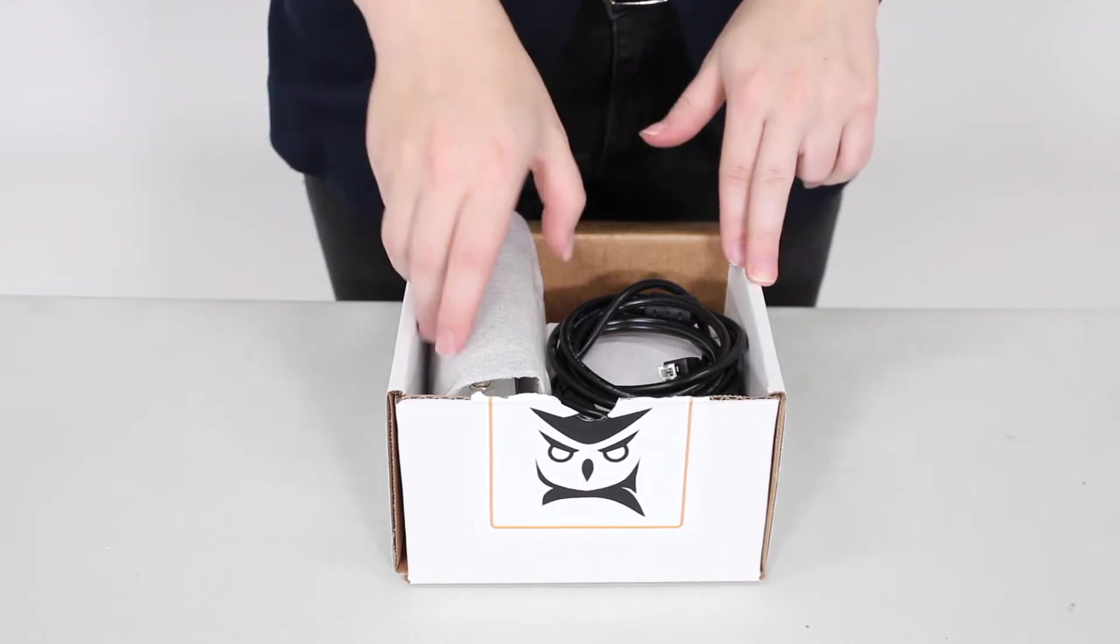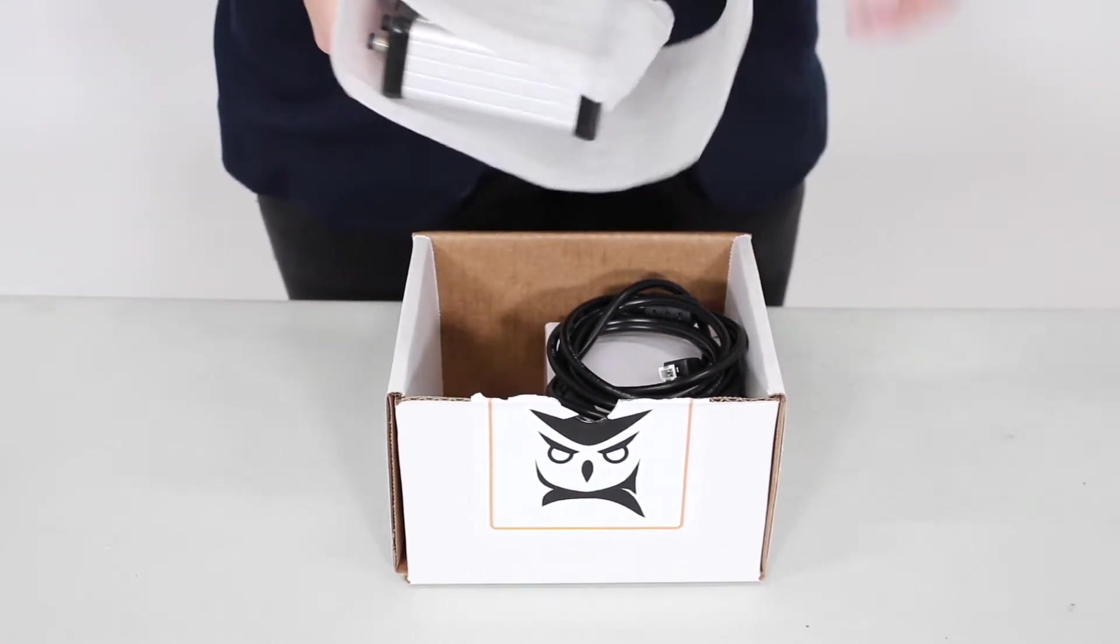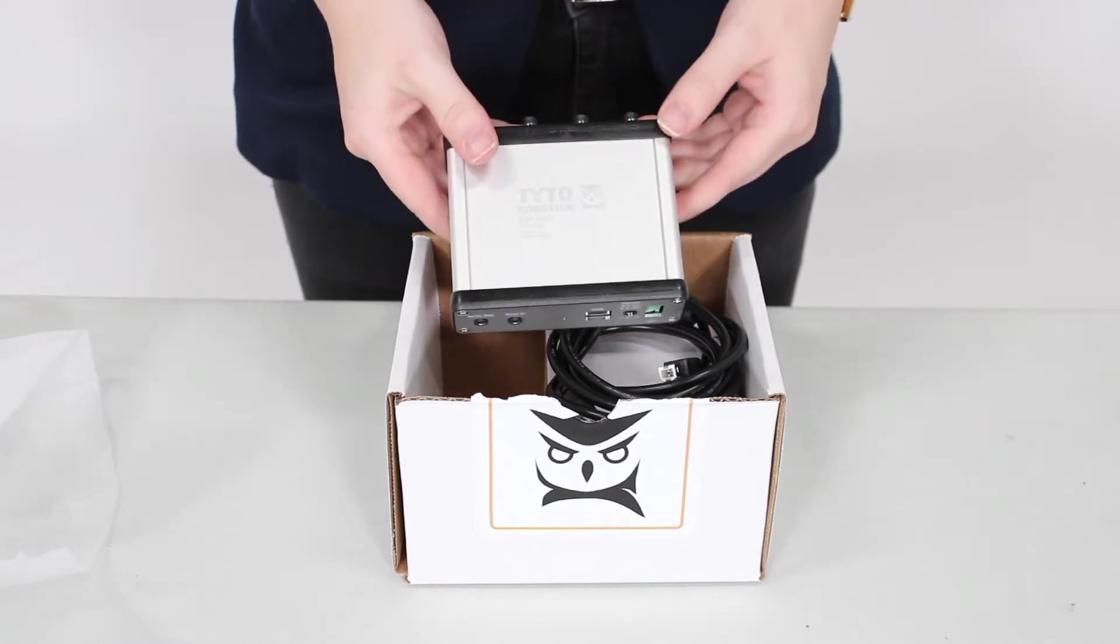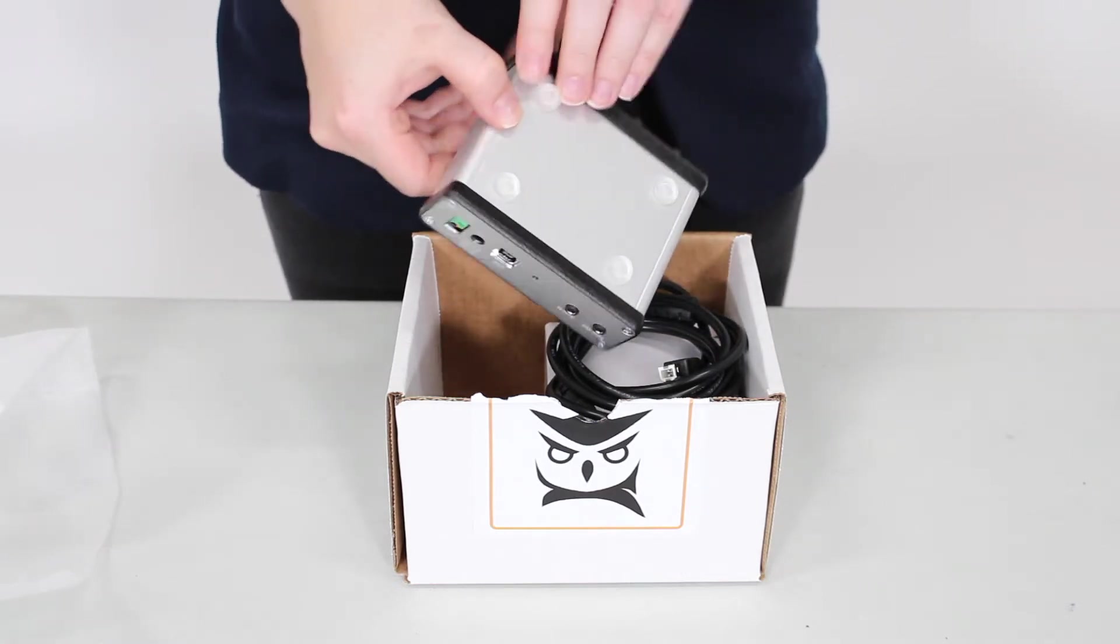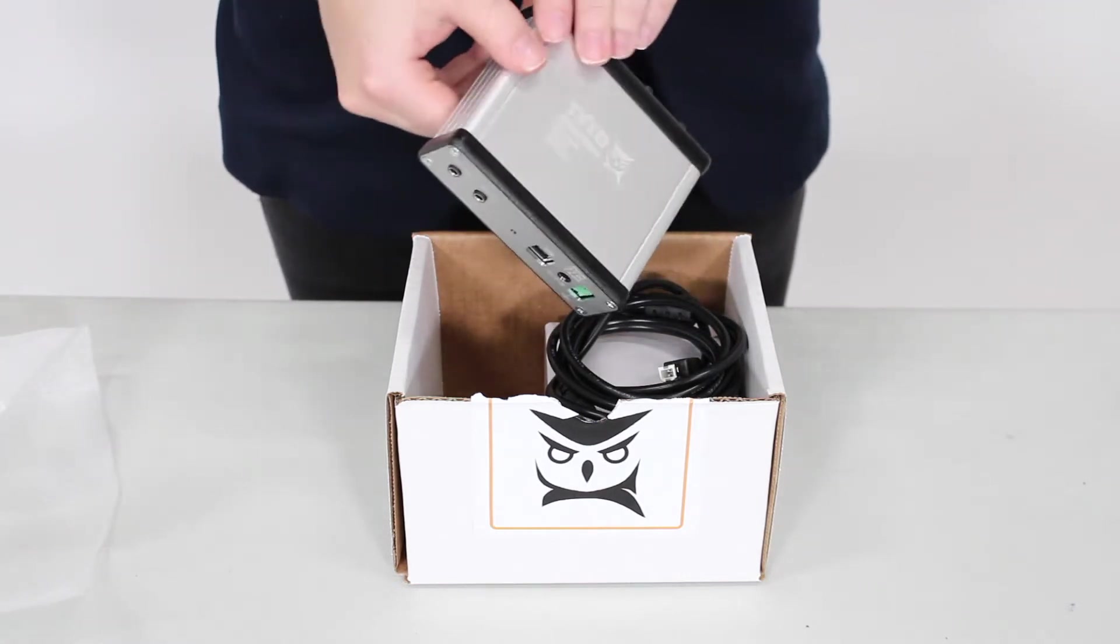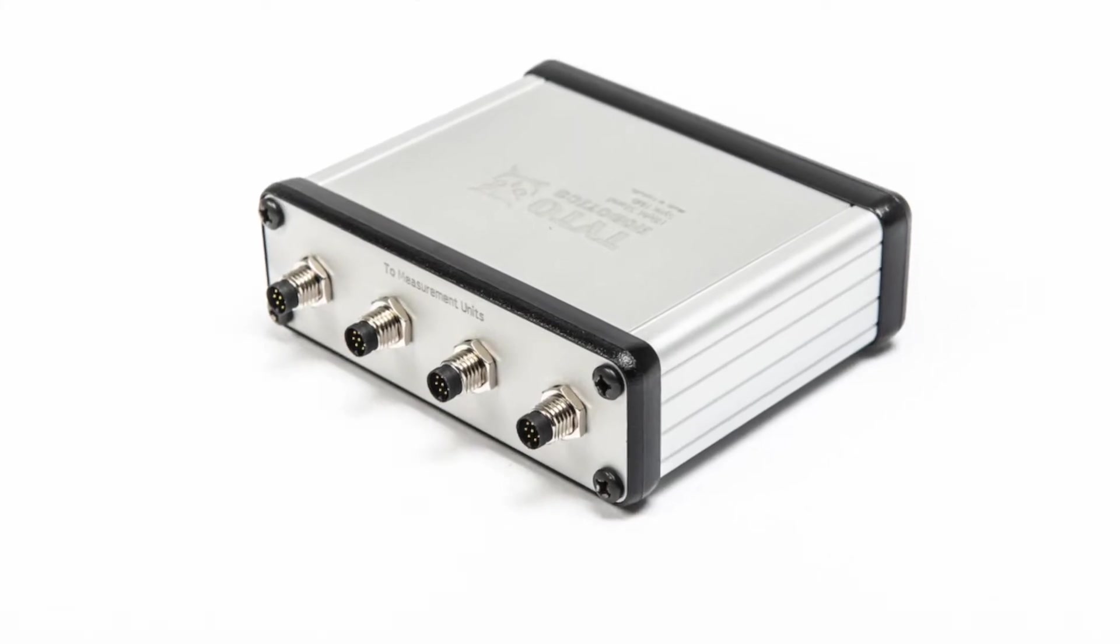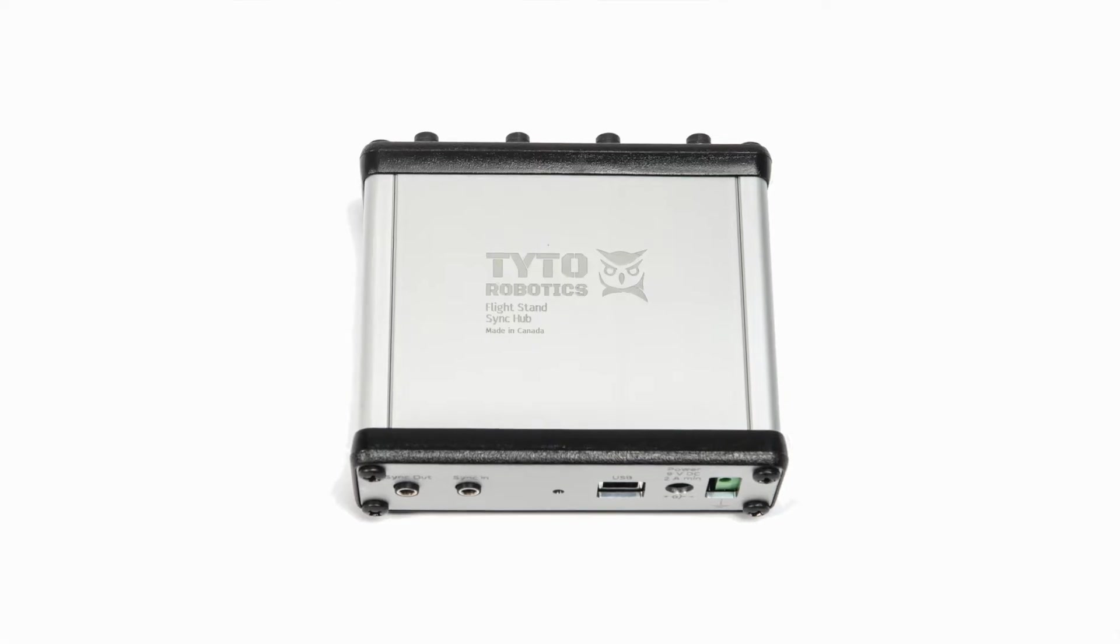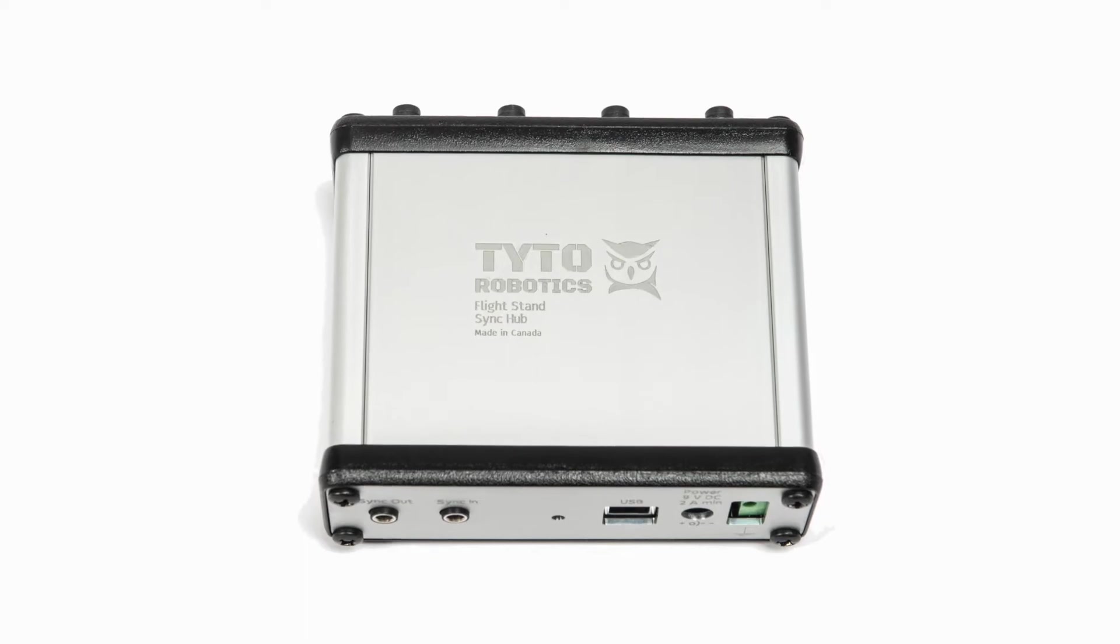In the next box we have the sync hub which connects and synchronizes the EMU and FMU with each other and your computer. Each sync box can support two powertrains and if you are testing more than two powertrains you'll receive multiple sync boxes with sync cables to connect and synchronize them.